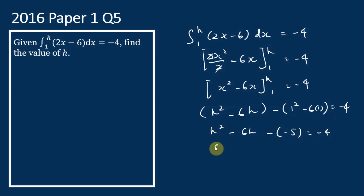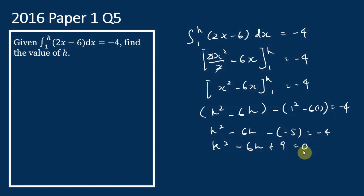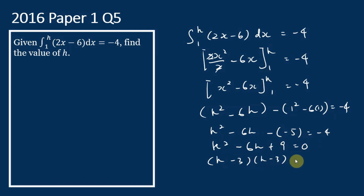So h squared minus 6h plus 9 equals 0, which factors as (h minus 3)(h minus 3) equals 0. Therefore h equals 3 — this is the value of h.